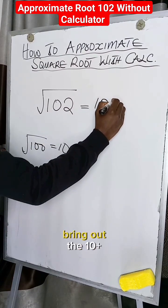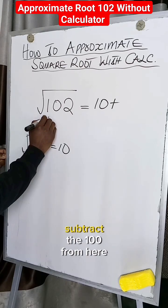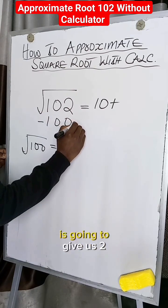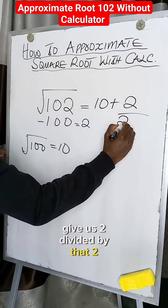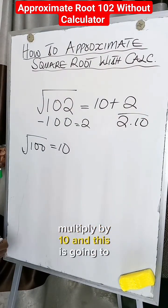So what we are going to do is bring out the 10 plus, subtract the 100 from here, it's going to give us 2. So this is going to give us 2 divided by that 2 multiplied by 10.